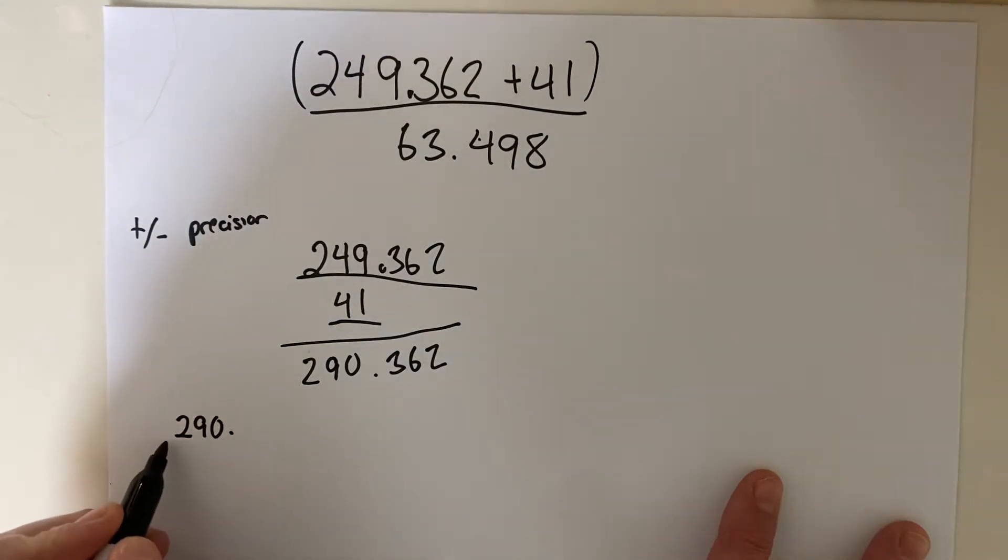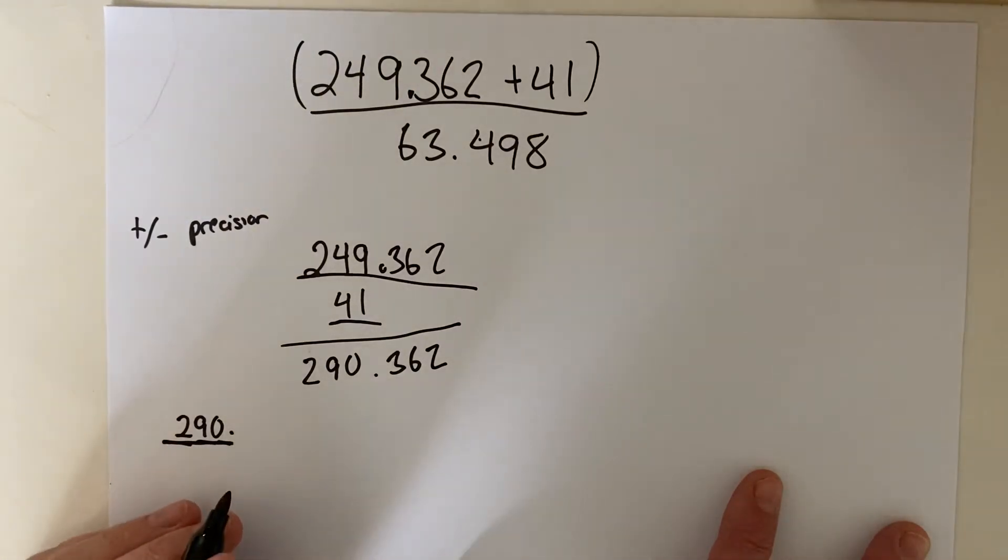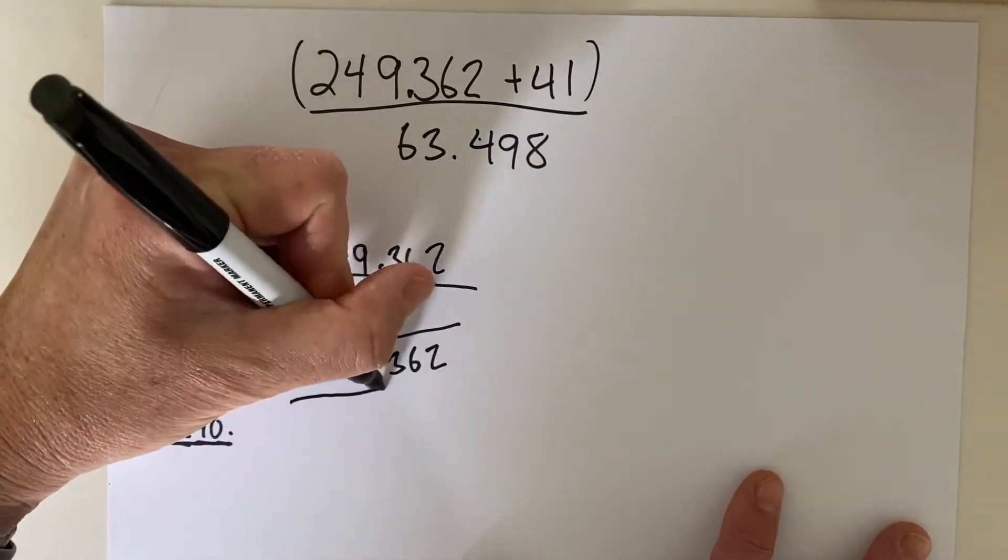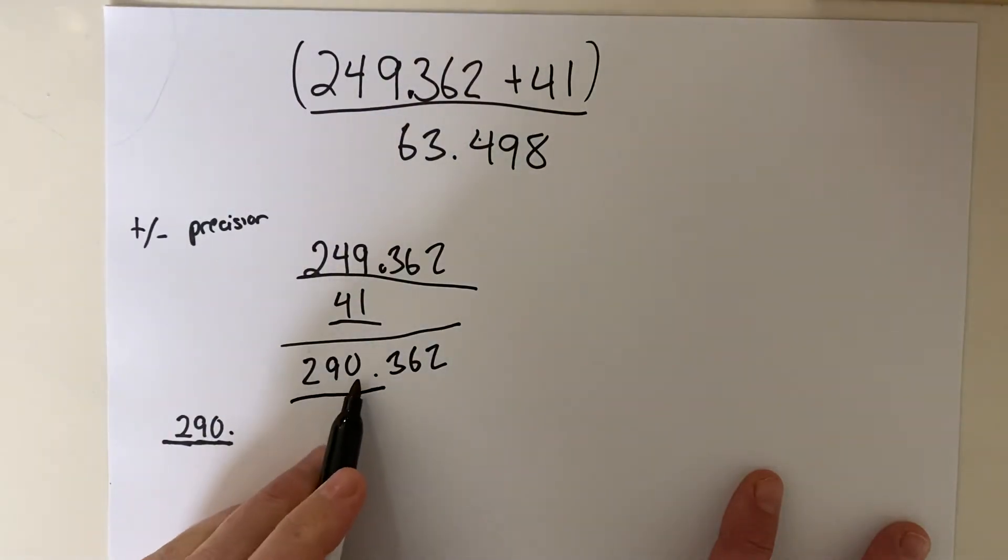That says, hey, I know the hundreds, the tens, and the ones place. I know this whole thing. And so that's really important for the next step. So we actually know 290 point. In other words, one, two, three significant figures of this resulting answer.